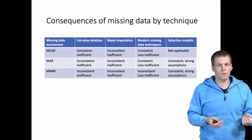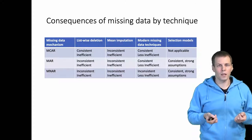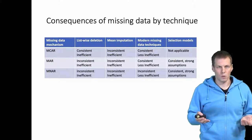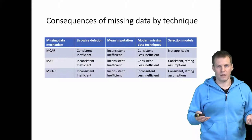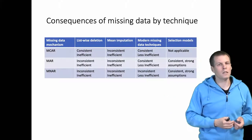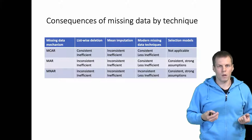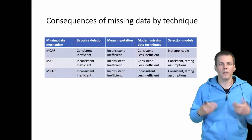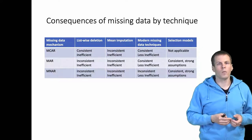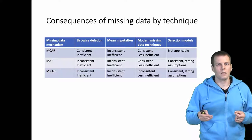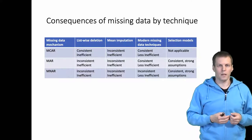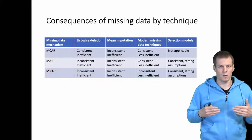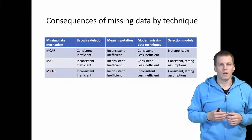Mean imputation takes the mean of a variable and substitutes that mean for all missing values of that variable. It is sometimes recommended in entry-level quantitative data analysis books, but it is generally a really bad technique. Then we have modern missing data techniques — multiple imputation and maximum likelihood estimation with missing data — and selection models, particularly Heckman's selection model, where we model the cause of the missingness in one equation and use that information to correct the equation of interest.